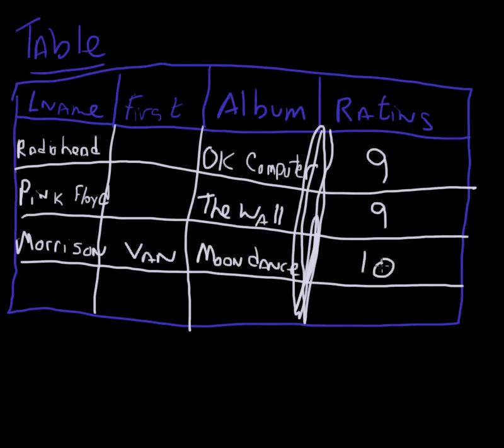So this is typically how we store information inside of an Oracle database. What I want to do now is represent this information inside the database, so I'm going to create a table with each one of these pieces of information. Another important thing to note is the type of data I'm going to put in each column.